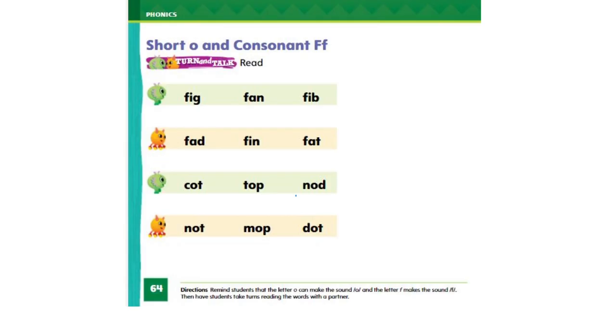Now it's time to do some work in our MyView books. Open your books on page number 64, K2 for short O and consonant F. On this page, you have to read all these words. Have one of your family members take a video of you reading and send the video to your teacher.